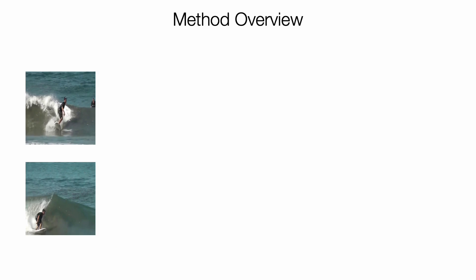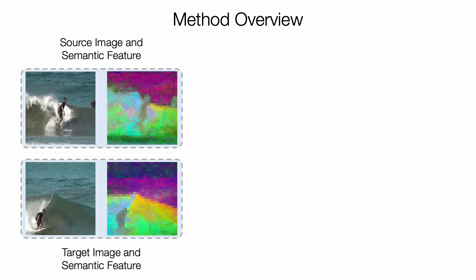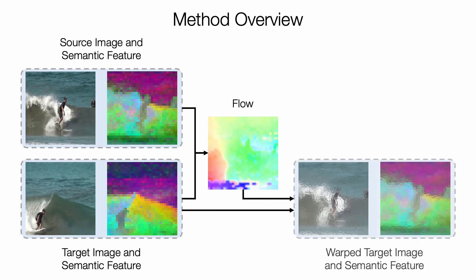In our project, we combine the best of both worlds. Given a pair of source and target images, we first use a pre-trained semantic feature encoder, Dino, to extract features of both images. Then we predict the dense flow conditioning on both images and features, and warp the target image and feature using the predicted flow. Finally, we train the model to minimize the difference between the sources and warped targets. In this way, we can achieve both robust and fine-grained correspondence.